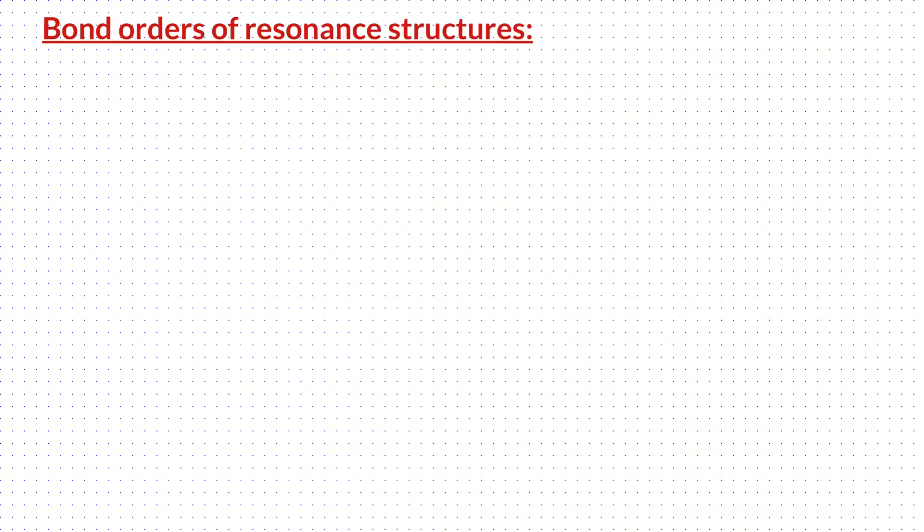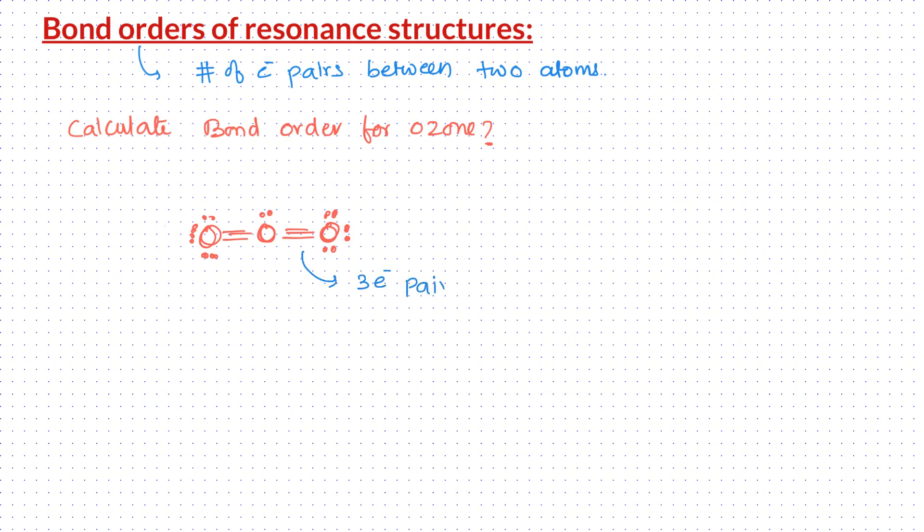We have already discussed what a bond order is, i.e., the number of electron pairs shared between a pair of atoms. Let us calculate the bond order for ozone molecule. Since the actual structure of ozone can be explained as an average or superposition of the two resonance structures, let us imagine the two resonance structures of ozone superimposed on each other. Now, between the center oxygen and oxygen on the right, how many electron pairs are there in both the structures combined? The answer is three electron pairs in two structures.